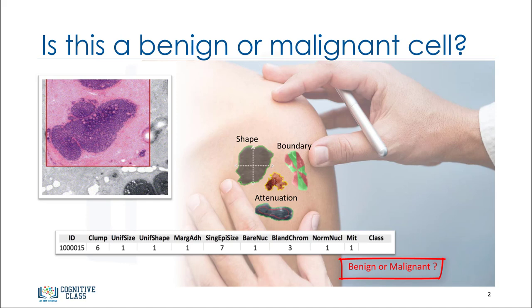In contrast with a benign tumor, a malignant tumor is a tumor that may invade its surrounding tissue or spread around the body, and diagnosing it early might be the key to a patient's survival.